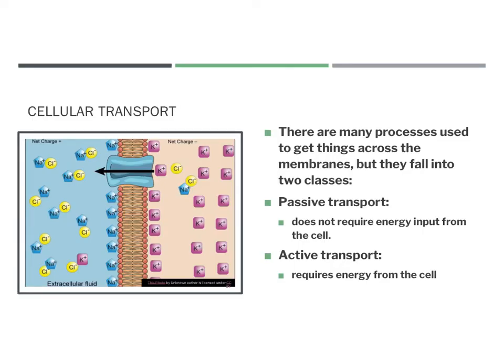There are a variety of different methods for things entering and exiting the cell, but they all fall into two classes. The first is called passive transport — think of just sitting back passively — passive transport does not require energy input from the cell. The other is active transport, which is actively moving things in or out, and it does require energy.